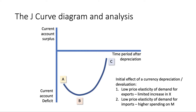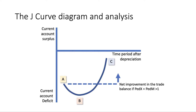Over time we move initially from A to B, but hopefully over time we then move from point B to point C, where the current account balance improves. This happens providing that the price elasticity of demand for imports and exports together are greater than one — greater than unity. This is known as the Marshall-Lerner condition. If the Marshall-Lerner condition holds, demand for exports rises significantly and spending on imports falls, so eventually the current account balance will improve if the sum of the elasticities of demand for exports and imports is greater than one.